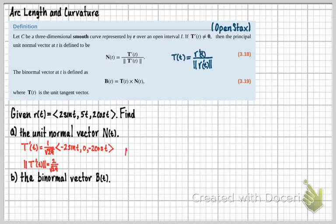So there it is. So now what we're going to do is we're just going to use those two pieces of information for the formula NT. And that's going to be T prime T over the magnitude of T prime T. So this is going to be 1 over square root of 29 times the vector, and that's going to be all over 2 over square root of 29.